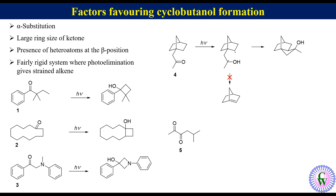Compound 5 has two keto groups, 1 and 2. With respect to them there are two types of gamma carbons with hydrogen atoms: gamma 1 and gamma 2. Abstraction of hydrogen from gamma 1 and gamma 2 will respectively give tertiary and primary free radicals. Since the tertiary radical is more stable, hydrogen abstraction from gamma 1 will be selective, giving the 1,4-diradical. Since the alpha position is substituted, it will give the cyclized product.